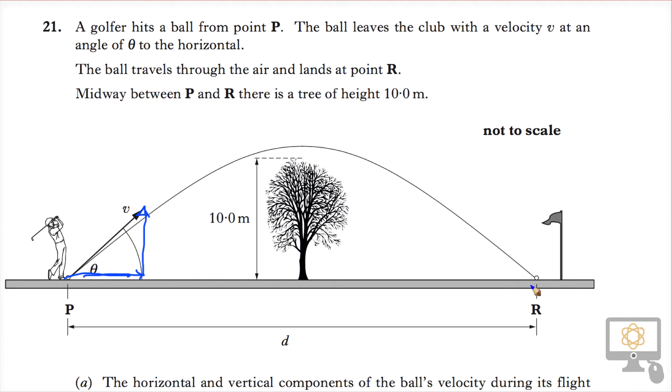The ball travels through the air and lands at R, fairly close to the hole, and midway between P and R there is a tree of height 10 meters. So we'll carry on and have a look at the rest of the question.